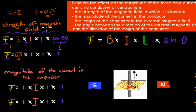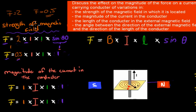That makes sense because the magnetic field from the magnets is what pushes against the magnetic field of the conductor. If that's twice as strong, the force applied will be twice as strong as well. So if we increase B, the force will be increased proportionally. That covers the first part.